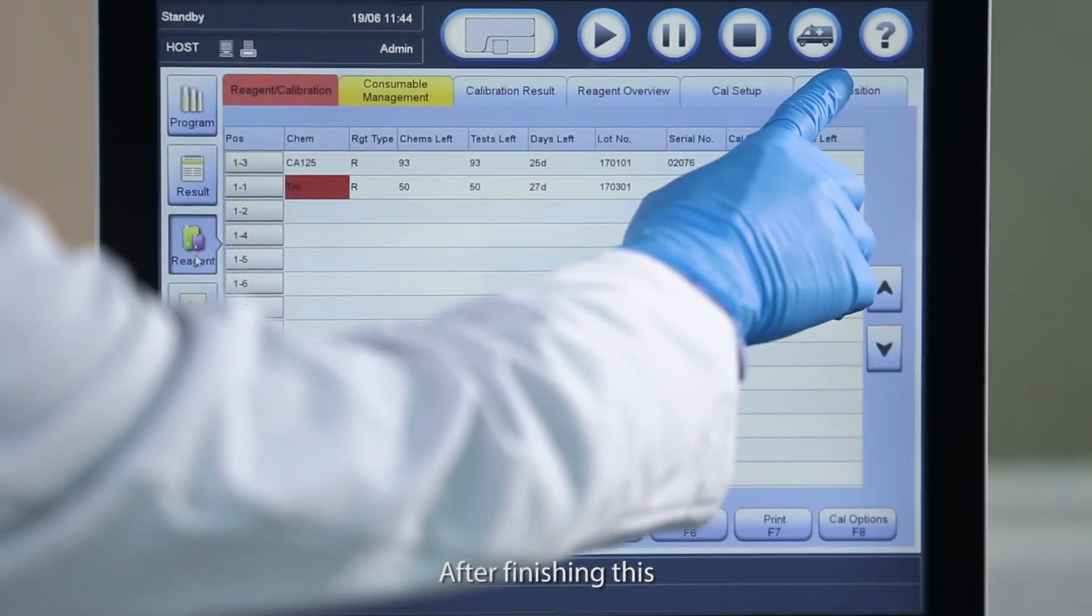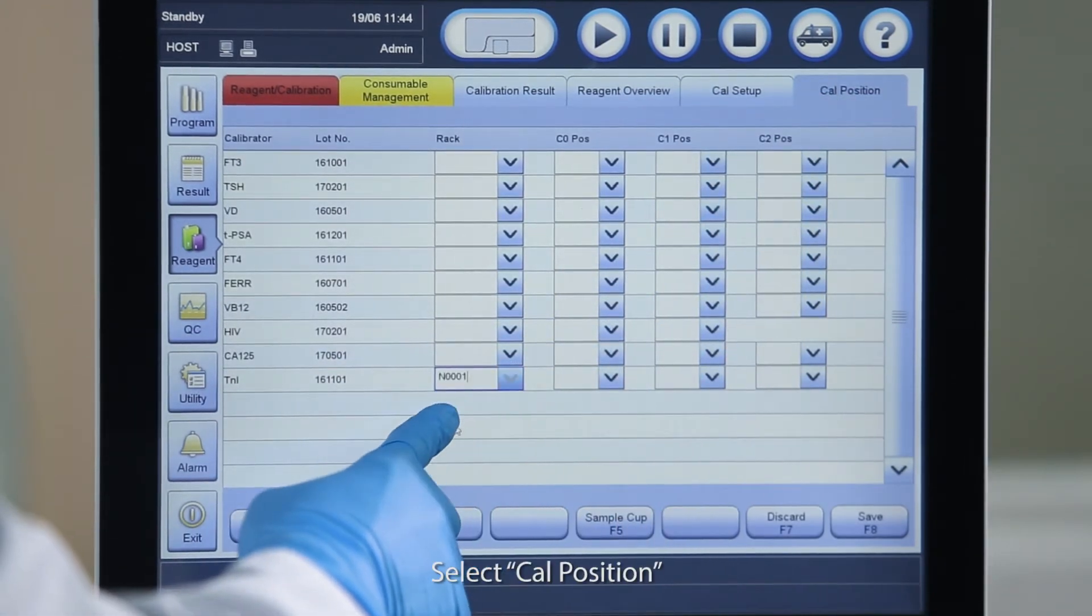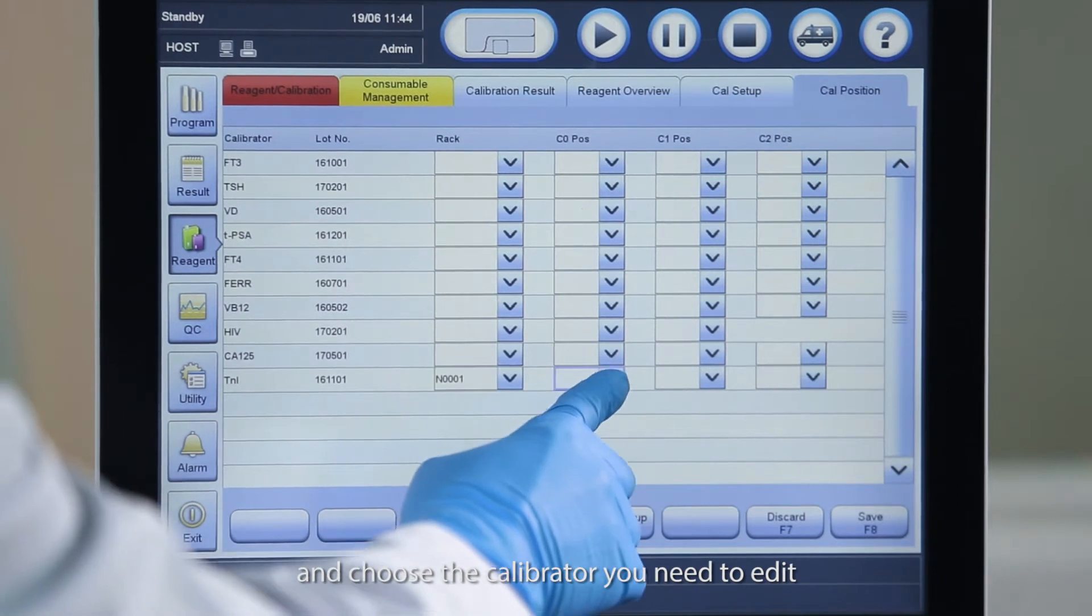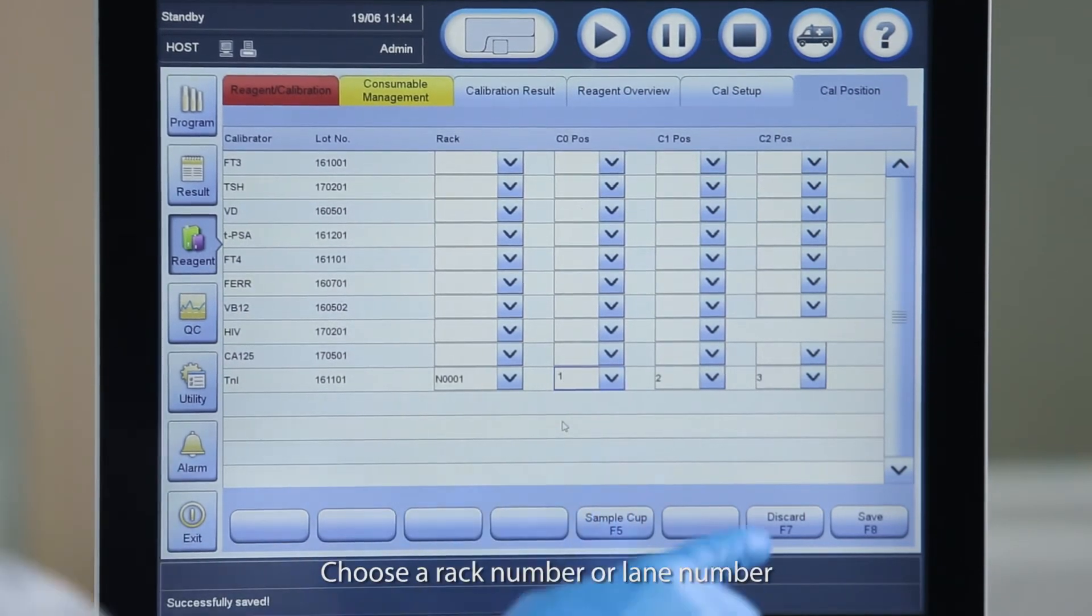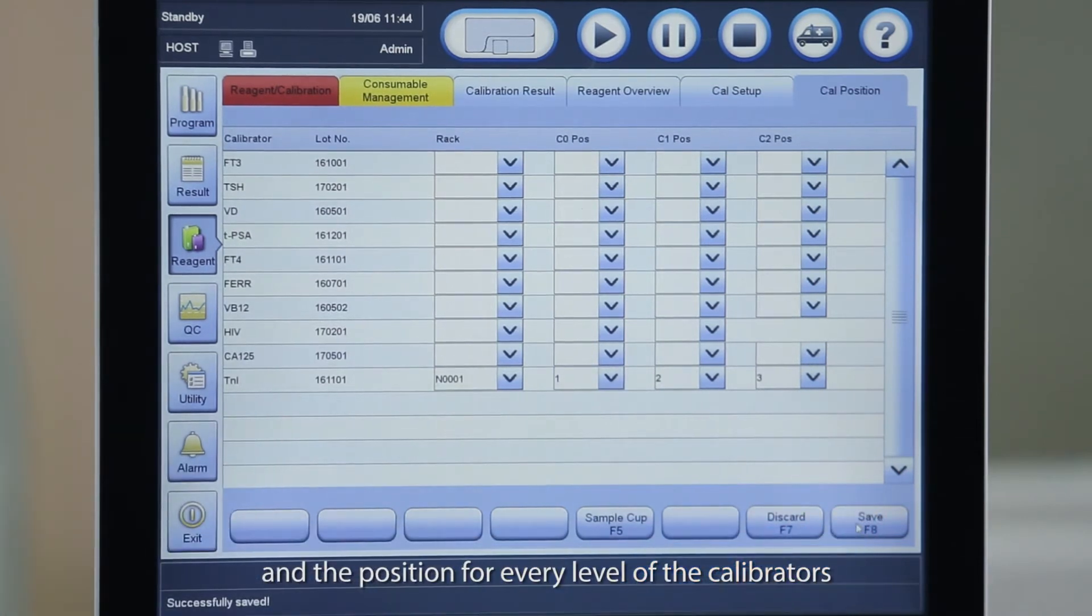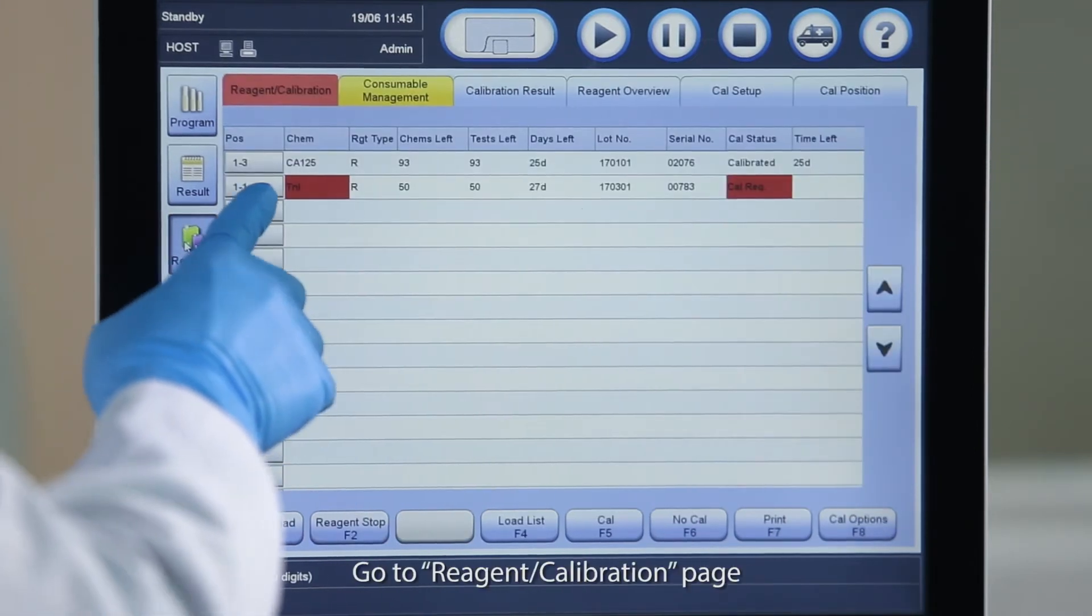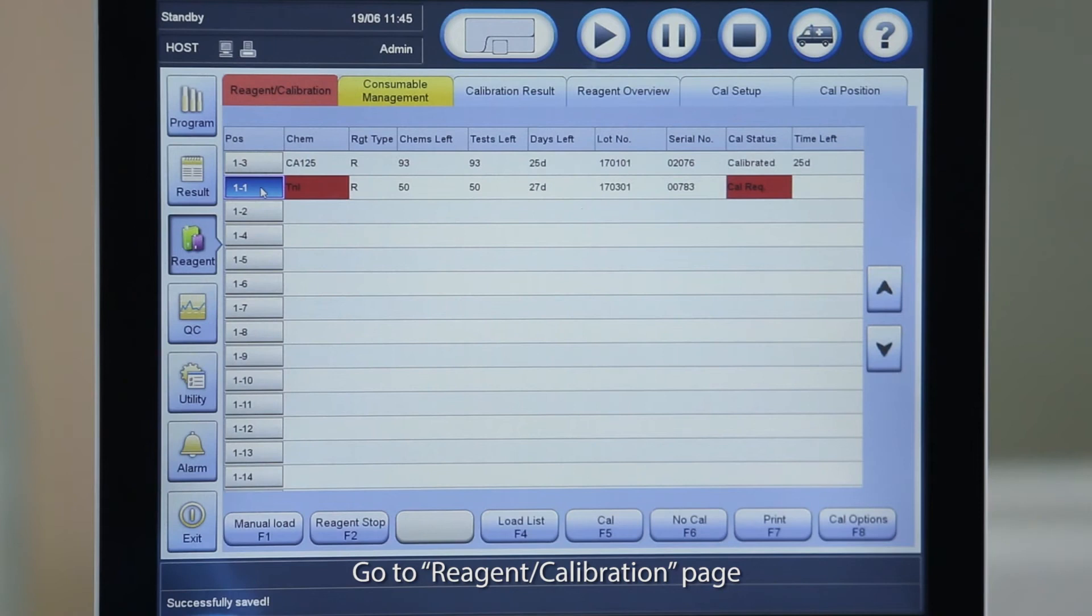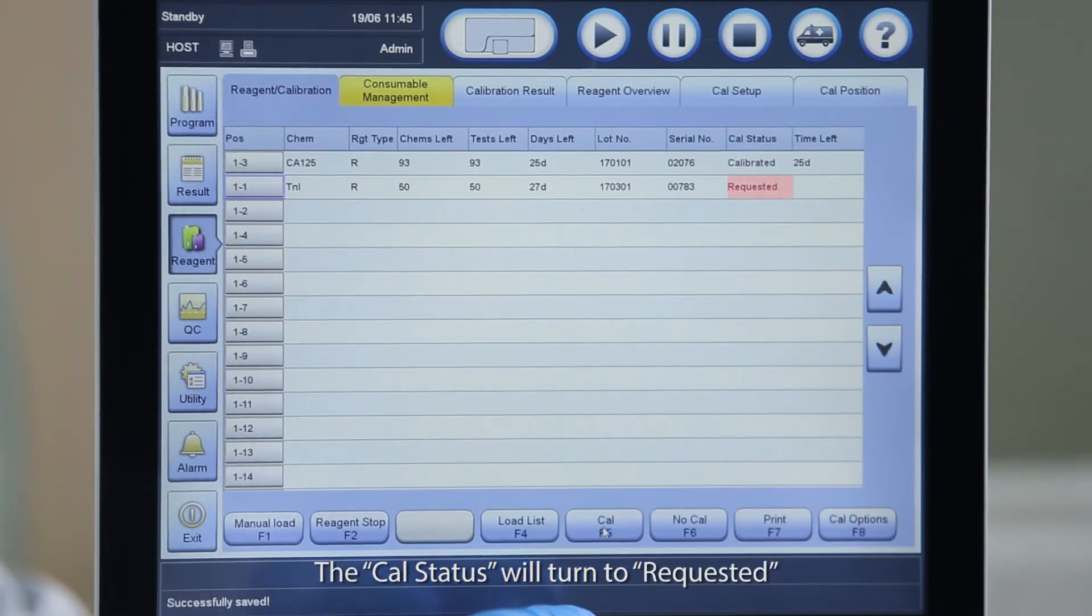After finishing this, we have to set up the calibrator position. Select Cal Position and choose the calibrator you need to edit. Choose a rack number or lane number and the position for every level of the calibrators. Next, we have to request calibration. Go to Reagent Calibration page. Select the chemistry that needs calibration. Select Cal. The Cal status will turn to Requested.